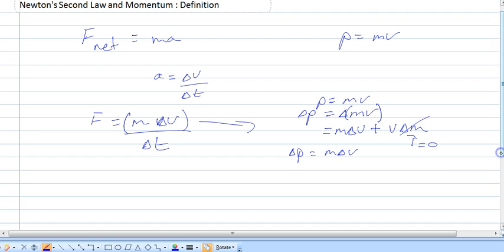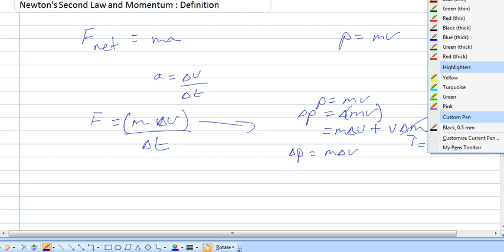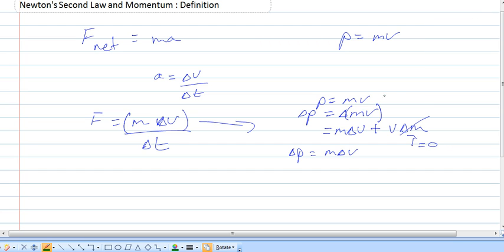If you're still not convinced, go back to the start and think about delta P equals delta MV. We know that M here is constant, not changing, which means we can take it out of our delta quantity. And what do we end up with? Same thing, delta P equals M delta V.